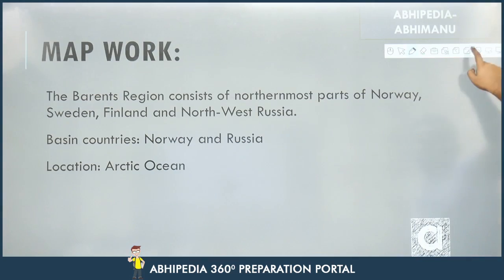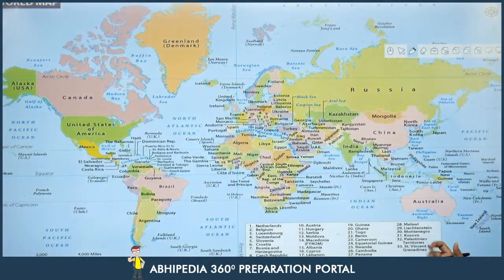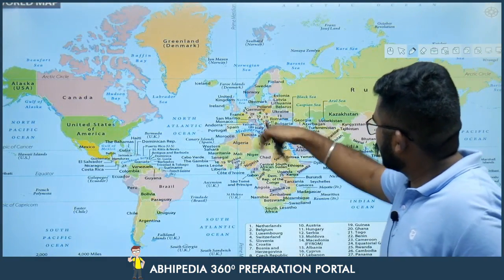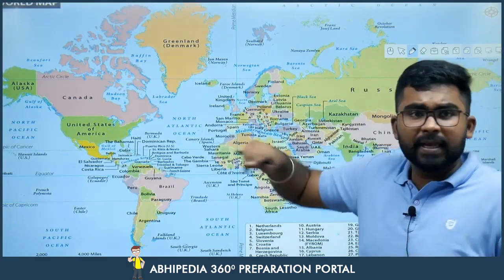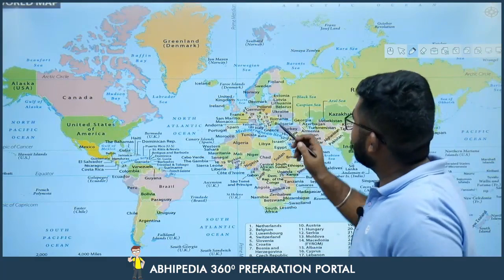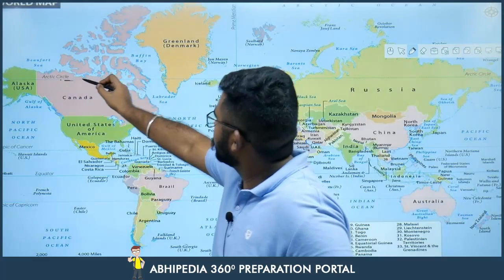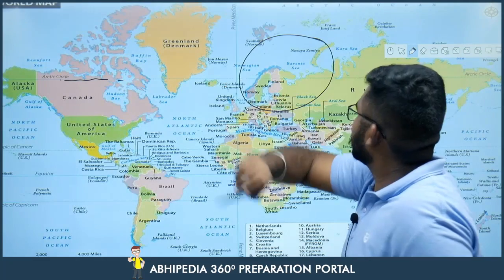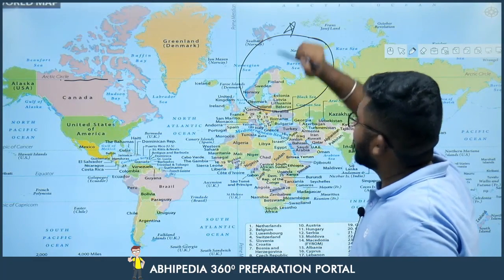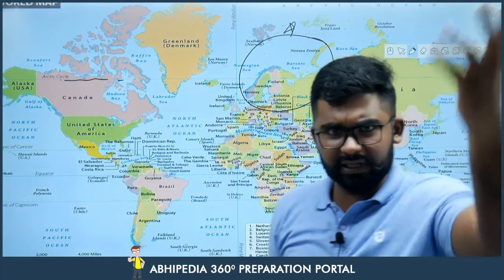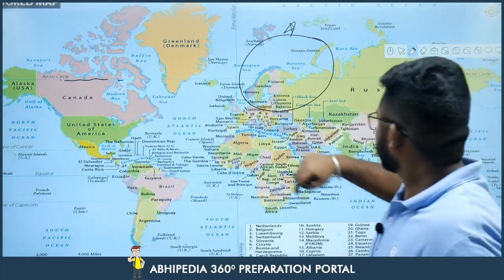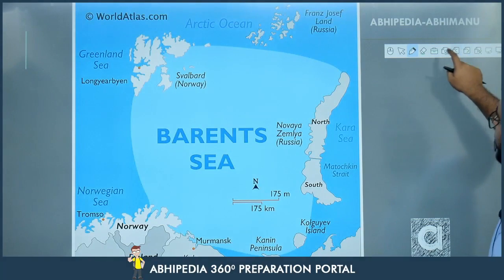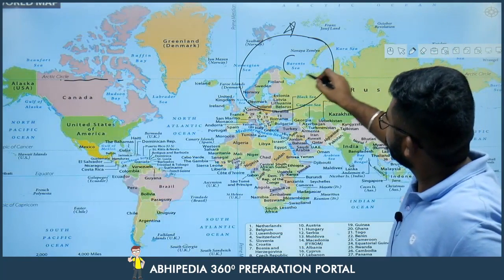Now let's do map work. The Eurasian part of the Arctic is the region where Arctic Amplification's effect is most concentrated. Here is a closer map view: that is the Barents Sea, which is the area we have been discussing in relation to amplification effects.